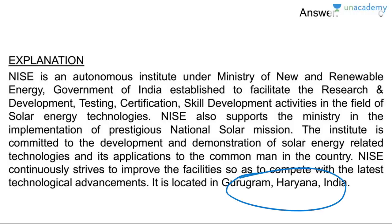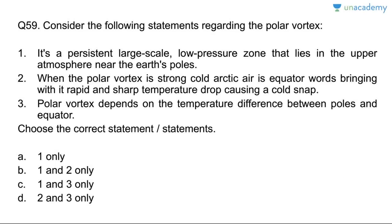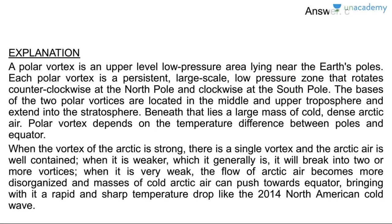Question fifty-nine: the polar vortex. It is a persistent large-scale low-pressure zone in the upper atmosphere near the Earth's pole — correct. When the polar vortex is strong, cold Arctic air moves equatorward bringing rapid temperature drops — wrong; when strong, the Arctic area is well-contained. Polar vortex depends on the temperature difference between poles and equator — correct. Answer is C, one and three. At the north pole everything rotates counterclockwise due to Coriolis forces.